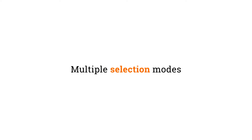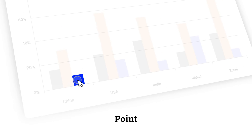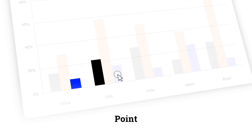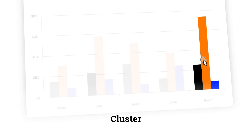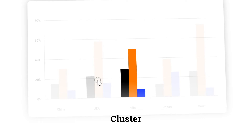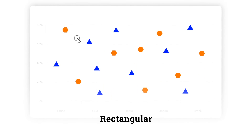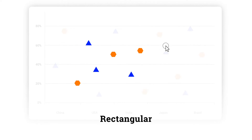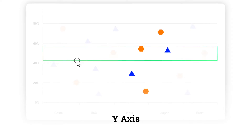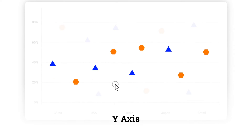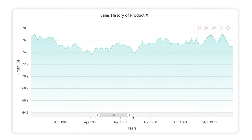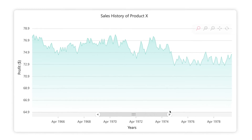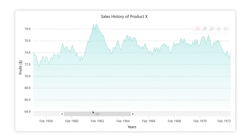There are multiple selection modes like point, series, cluster, rectangular, x-axis, and y-axis. Explore the overall view of a large chart using zoom in, zoom out, and pan features.